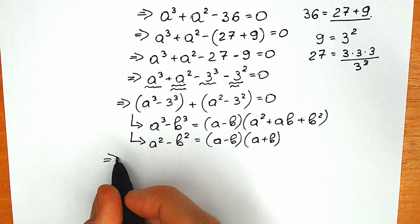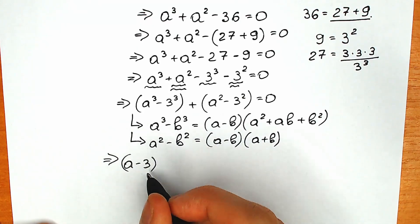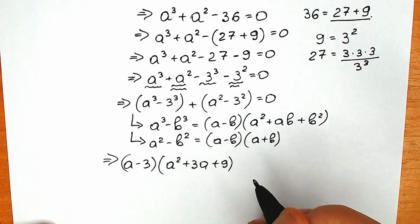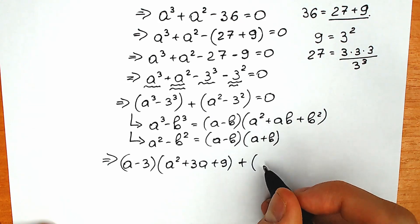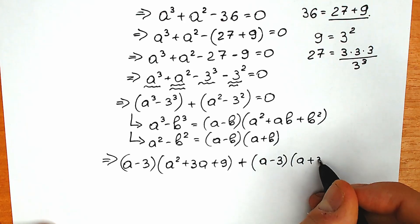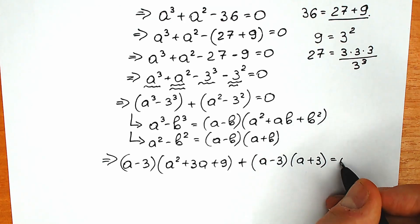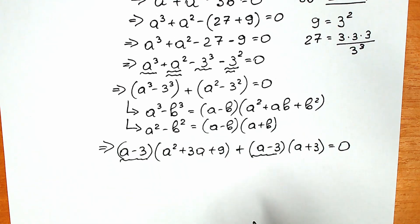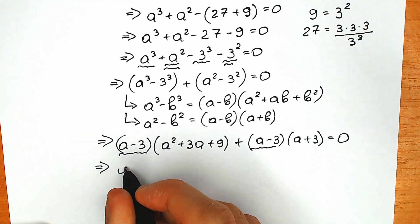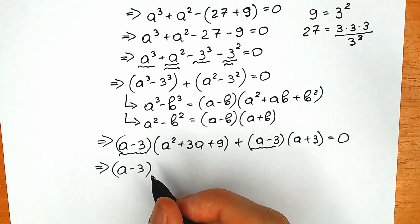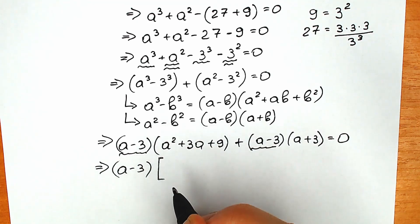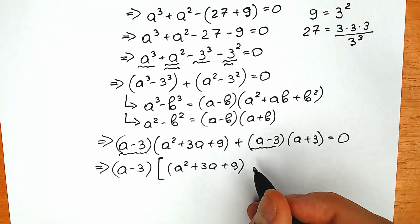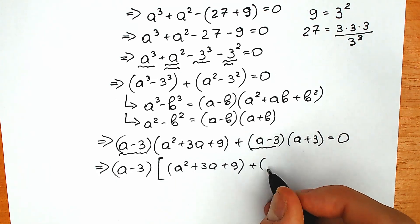Right now we'll apply the difference of cubes formula and the difference of squares formula. So from the new line, we have a minus 3 times, inside another parenthesis, a squared plus 3a plus 9 — this is our difference of two cubes. And right now we have plus a minus 3 times a plus 3 — this is our difference of two squares. Equal to zero. We have a minus 3 here and a minus 3 here, so we can easily factor out a minus 3.